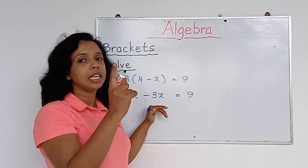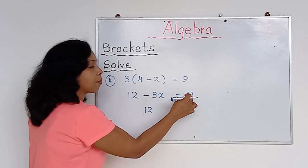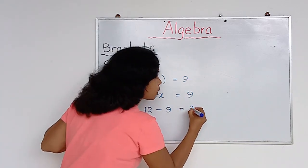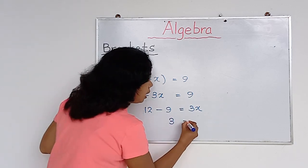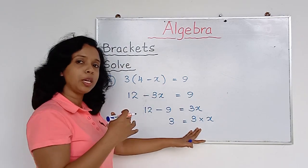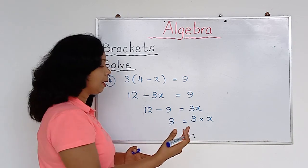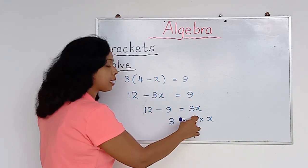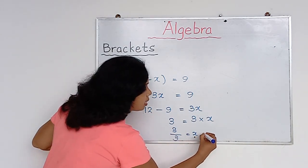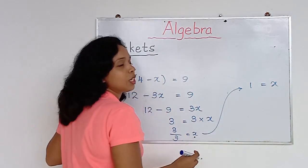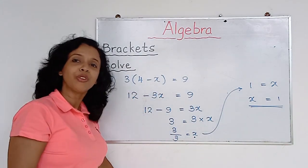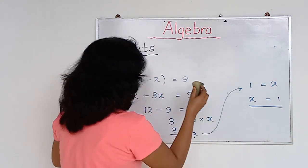Keep 12 as it is and bring 9 to this side — it becomes minus 9. Then bring minus 3x to the other side as plus 3x. So: 12 minus 9 equals 3x, which gives 3 equals 3x. Bringing the 3 across as division: 3 divided by 3 equals x, so x equals 1. That is the final answer.